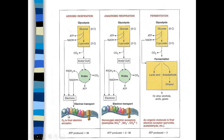Those electron carriers go to the electron transport chain, where in aerobic respiration, oxygen is the final electron acceptor. In anaerobic respiration, you have other electron acceptors including sulfate, nitrate, and carbonate. That's where the majority of ATP is formed. For aerobic respiration, you get 38 ATPs produced net. For anaerobic respiration, it's anywhere between 2 to 36, depending on what the electron acceptor is.